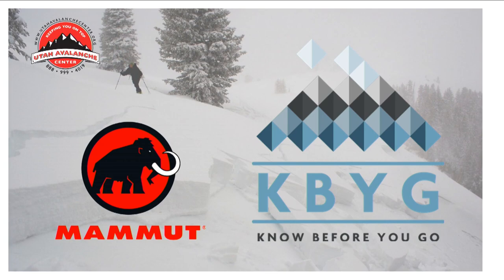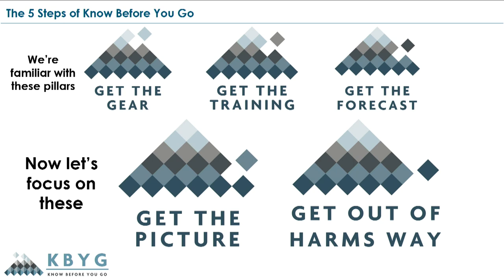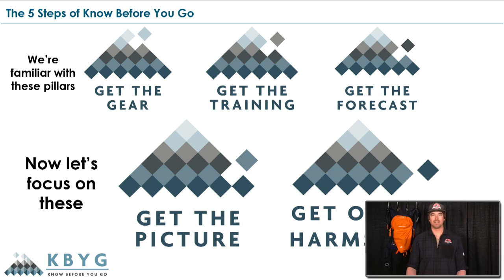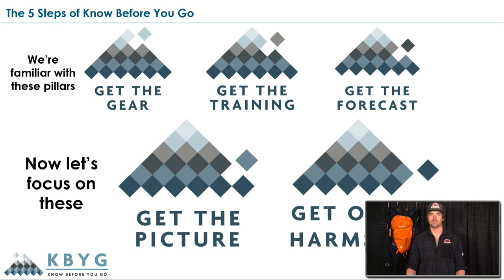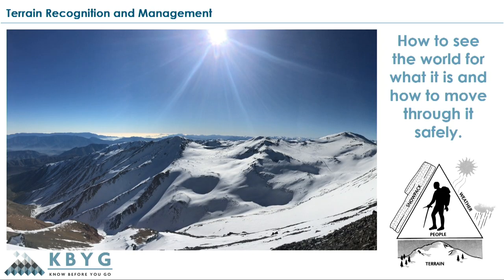Hey, this is Mac with the Utah Avalanche Center. Thanks for tuning in today for this Know Before You Go brought to you by Mammut. If you've seen our Know Before You Go program before, you're probably familiar with these five pillars: get the gear, get the training, get the forecast, get the picture, and get out of harm's way. Today we're going to be focusing on those latter two — getting the picture and getting out of harm's way — and in particular how it relates to terrain management.